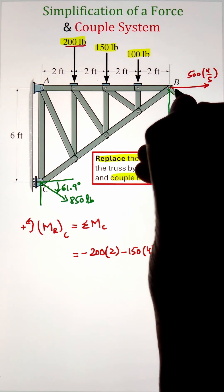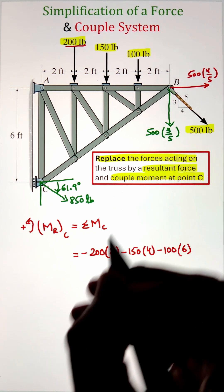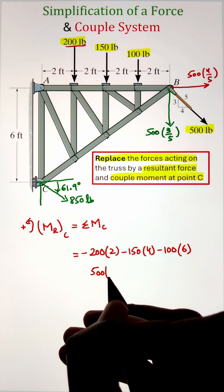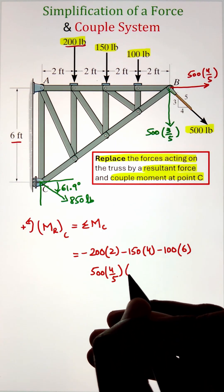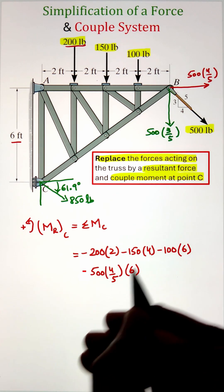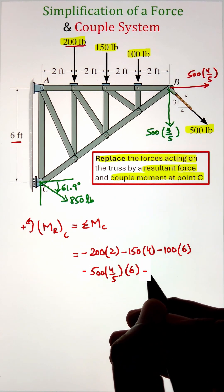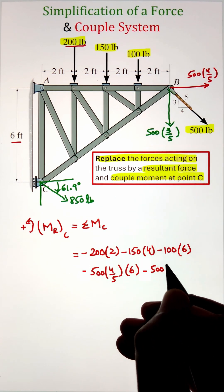Similarly, 150 pound force and 100 pound force are going to create clockwise moments. That's why they are taken as negative. Next we have 500 times 4 over 5 that is applied horizontally, so the moment arm is in the vertical direction of 6 feet. This force is going to create a clockwise moment as well.